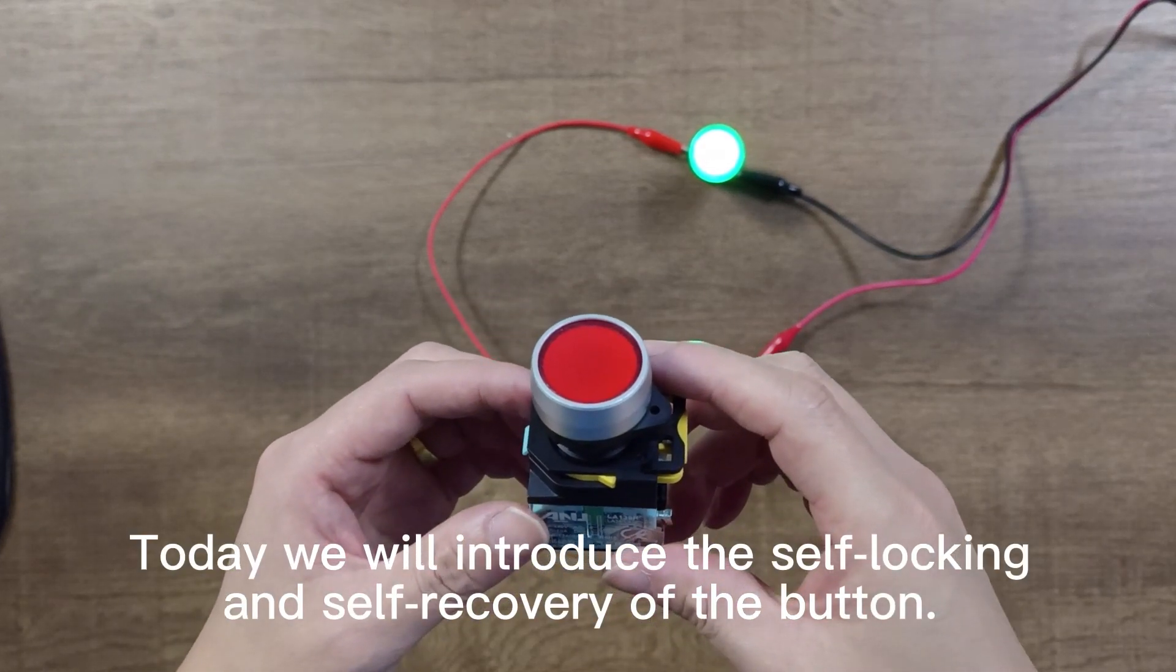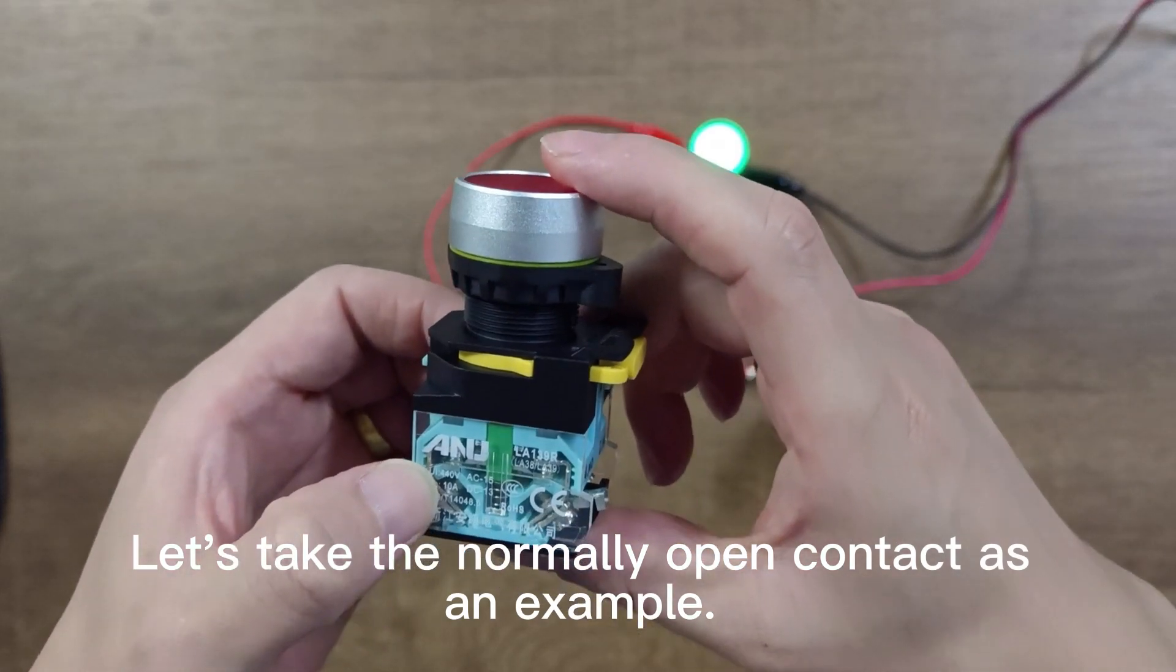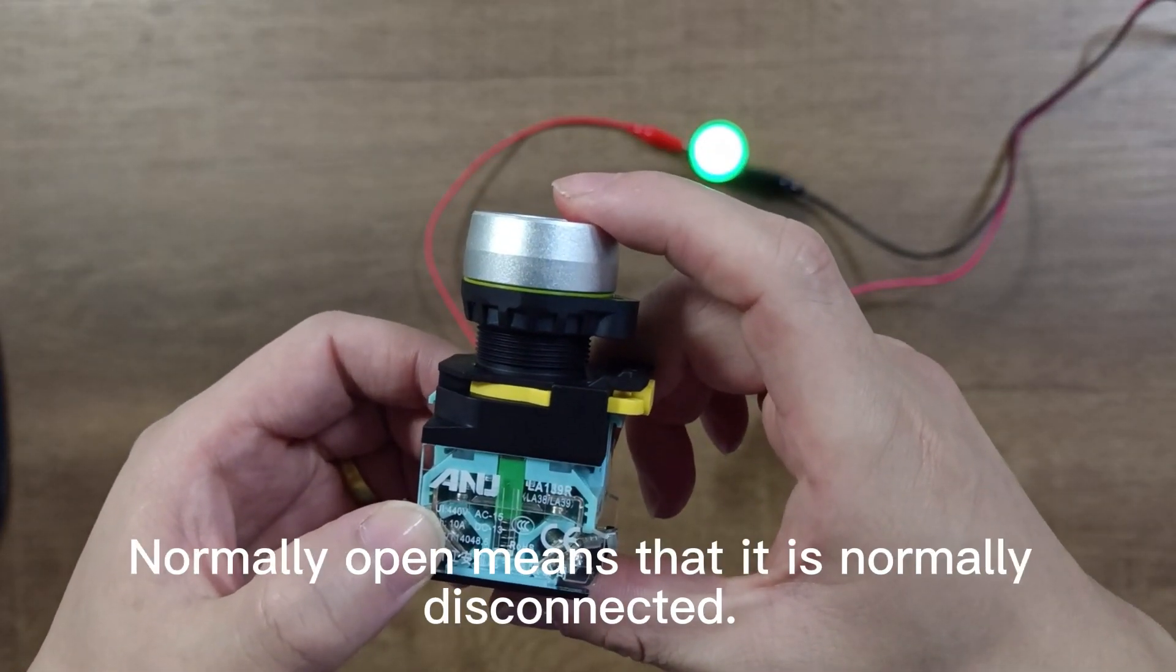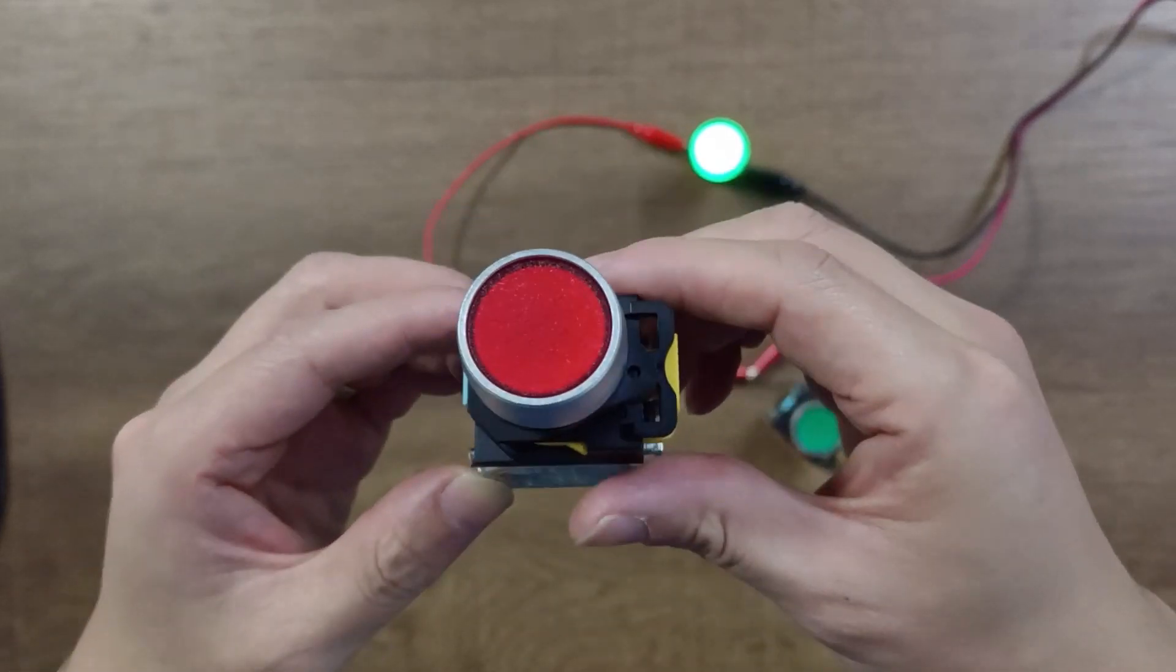Today we will introduce the self-locking and self-recovery of the button. Let's take the normally open contact as an example. Normally open means that it is normally disconnected.